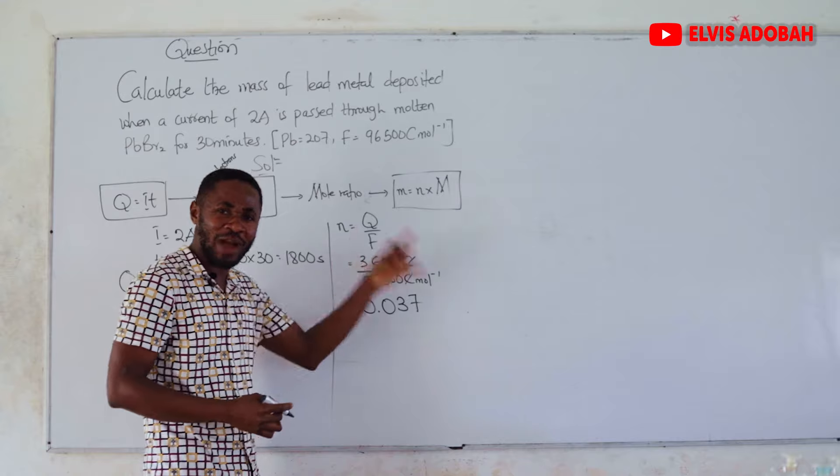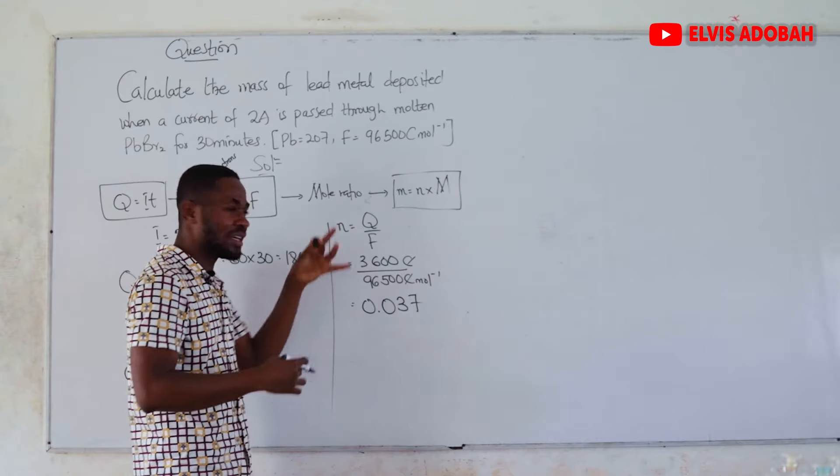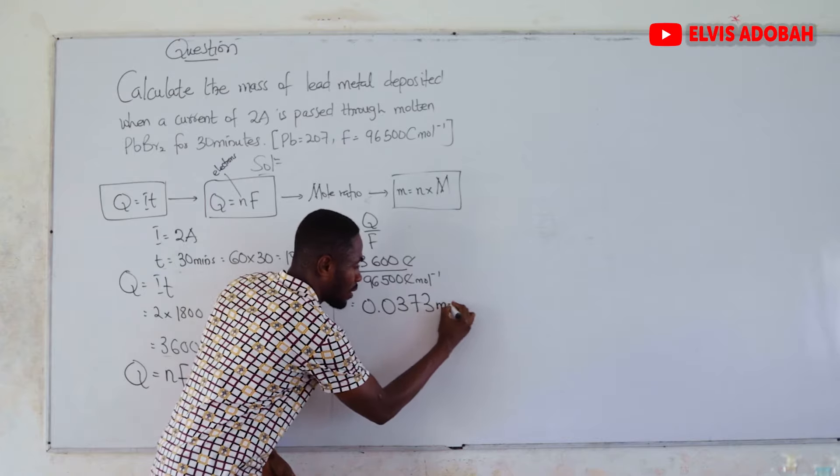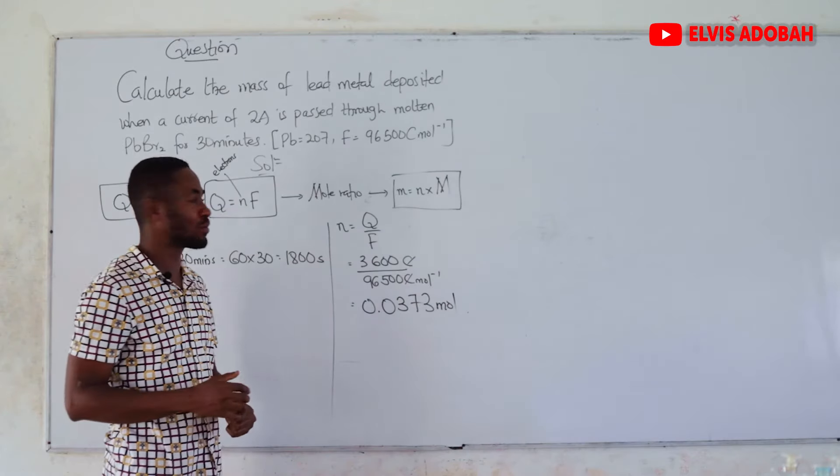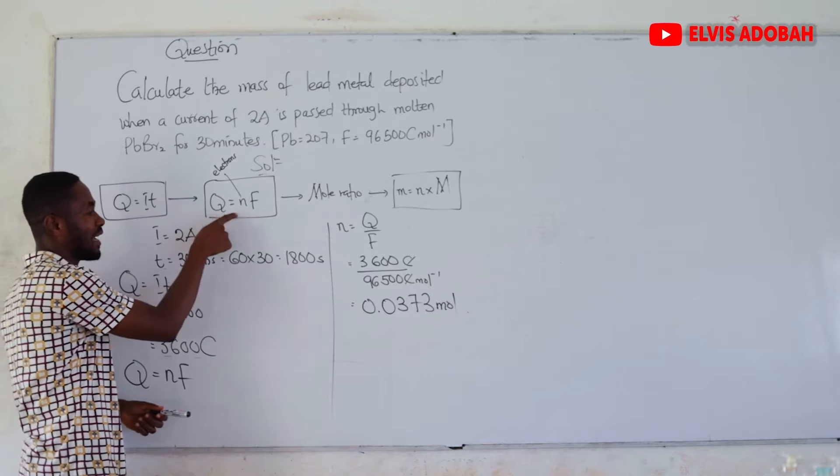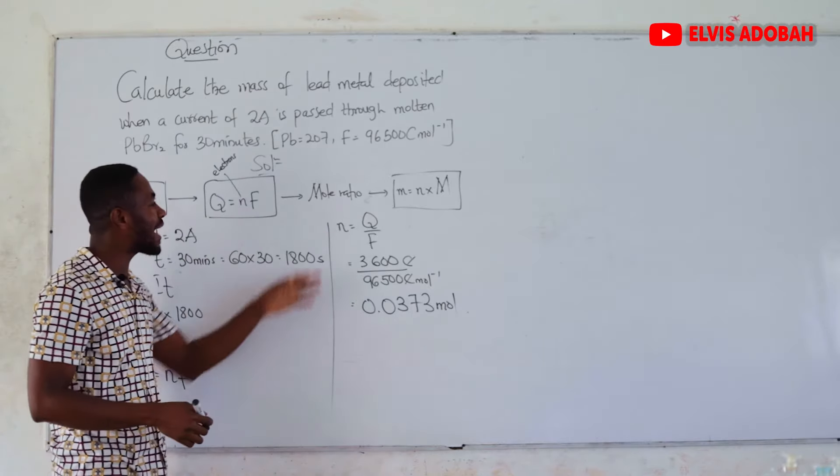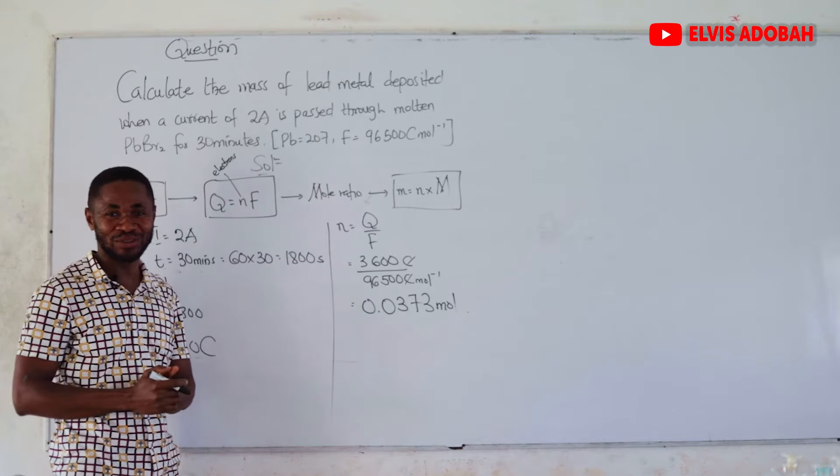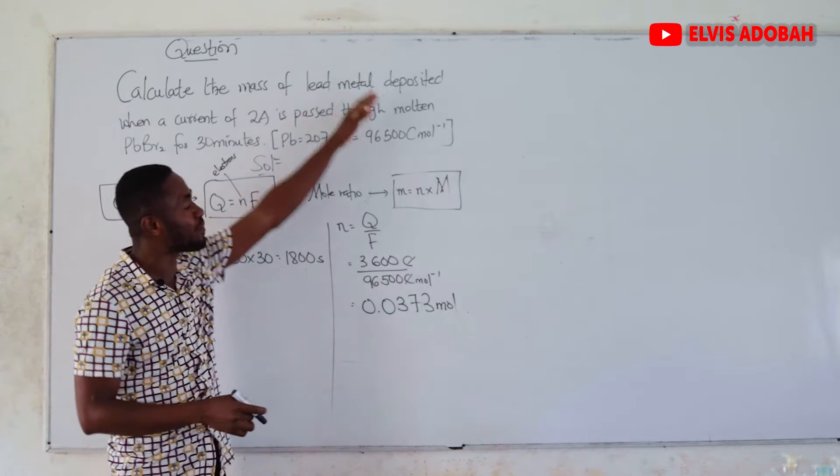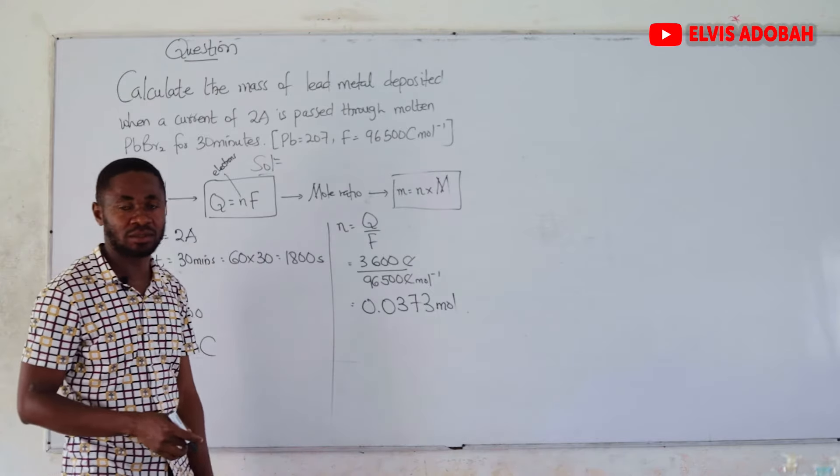The pair of moles will become moles of electrons. When we divide this, we are going to get 0.0373057, so we can say 0.0373 moles of electrons. We are done with the first step and the second step.